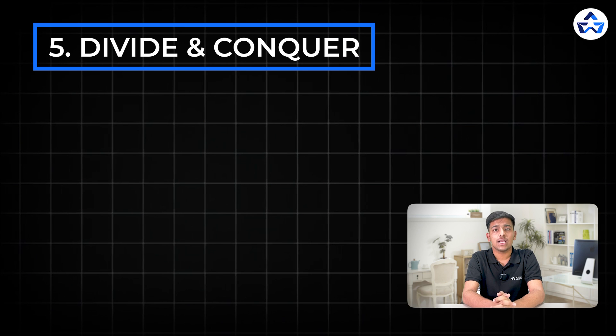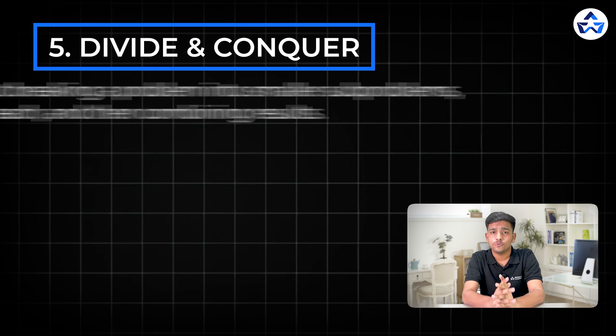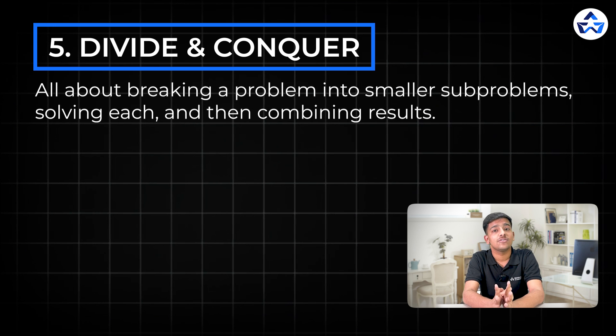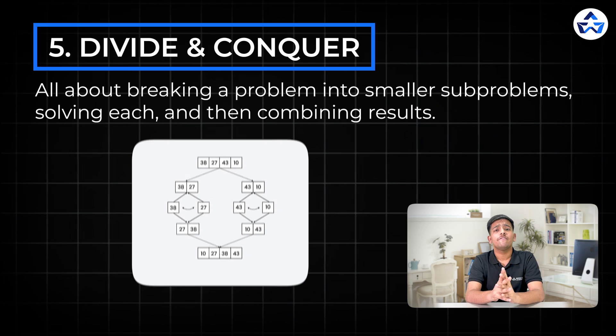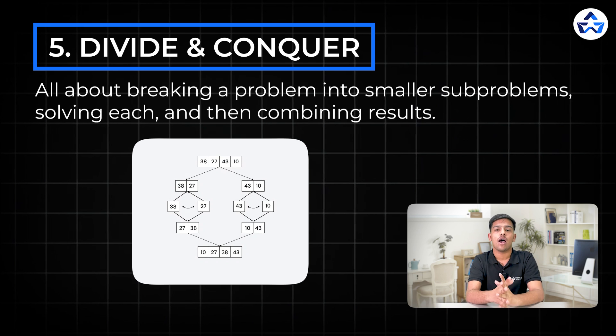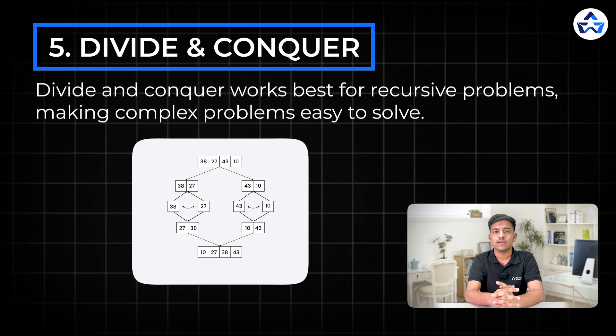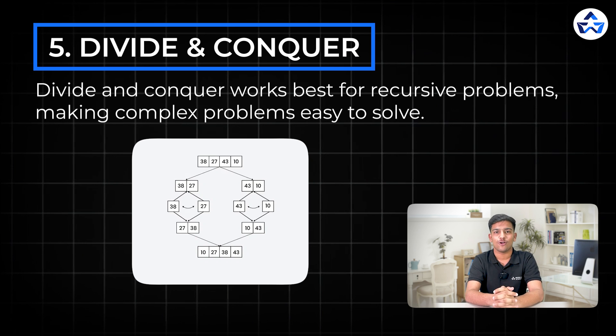The fifth one is divide and conquer. Divide and conquer is all about breaking down a problem into sub parts and then solving each and combining the results all together. For example, we split the array and solve each half and then combine the result. Divide and conquer works best with recursive problems making complex problems easy to solve. Example questions are different ways of adding parentheses.